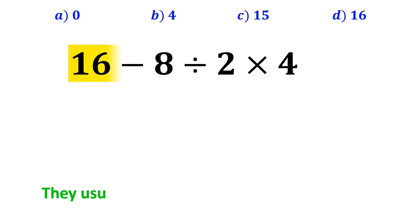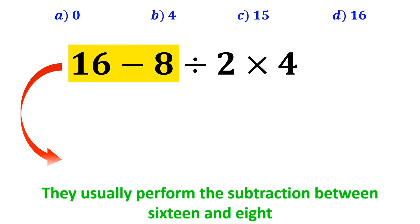In the next step, they usually perform the subtraction between 16 and 8, and simplify the expression to 8 divided by 2 times 4.